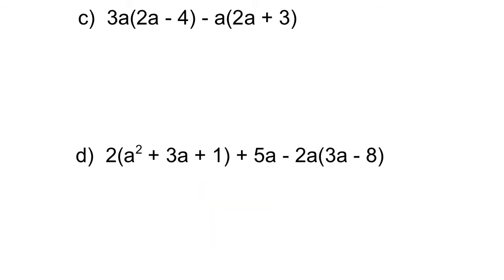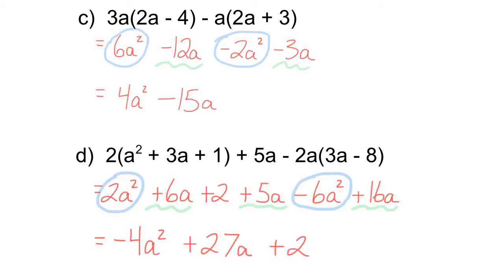Try these ones on your own. Pause the video and then check in when you get your answers. Here are my answers: 2a is multiplied by 3a to get 6a squared. Minus 4 is multiplied by 3a to get minus 12a. 2a is multiplied by negative a to get negative 2a squared. Remember your exponent rules — a number times itself gives an exponent of 2. Positive 3 times negative a is negative 3a. I have like terms and I combine them to get my final answer.